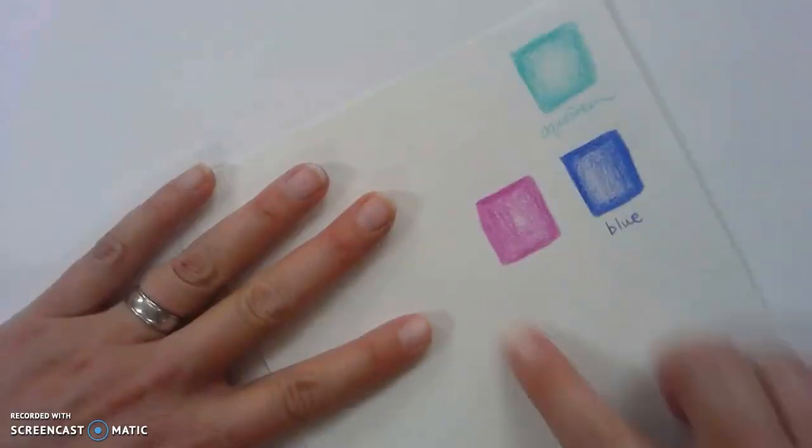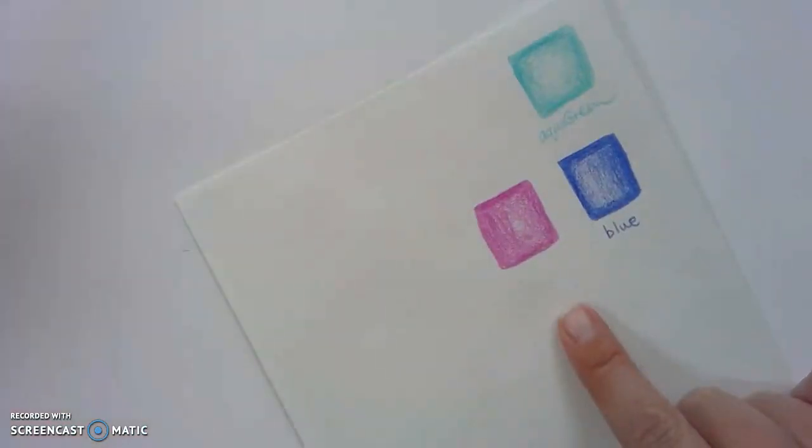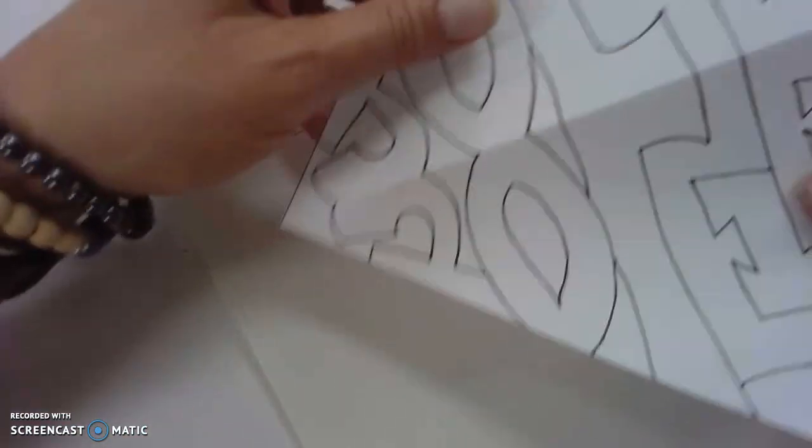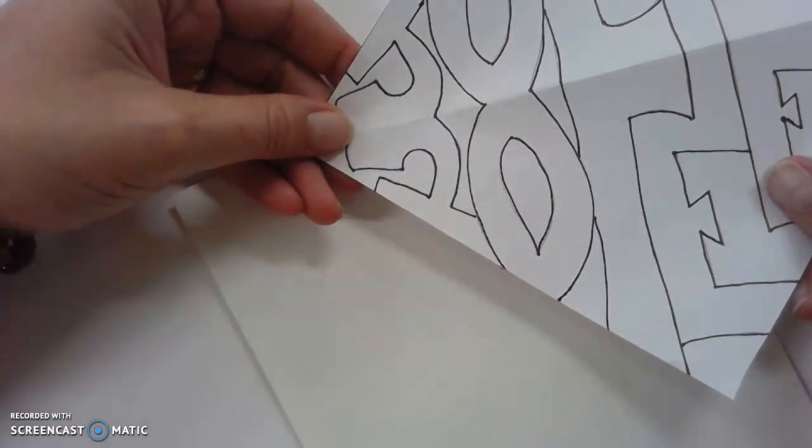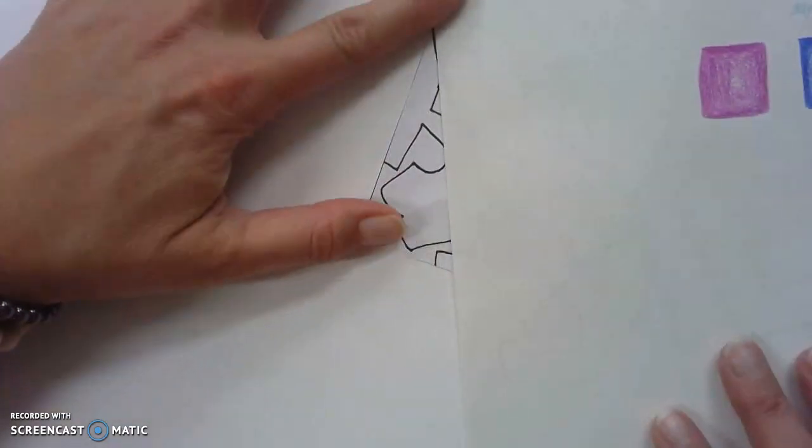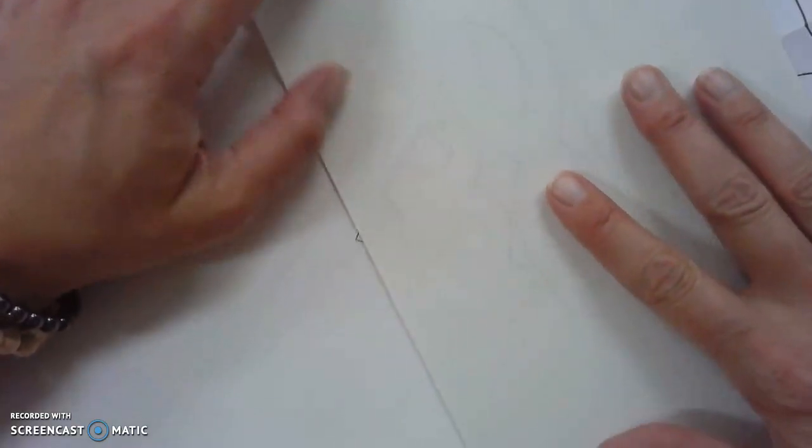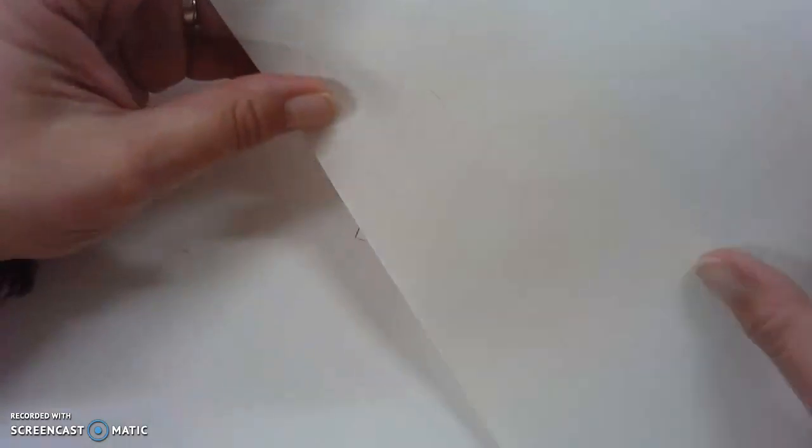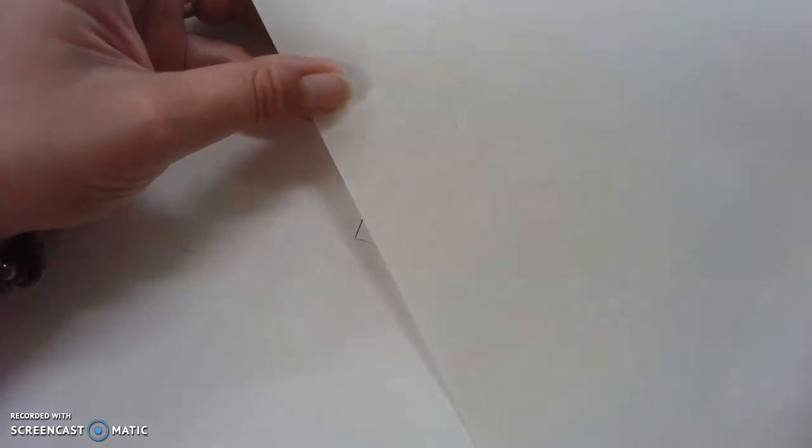Next, once you get this technique down, then I want you to try it with your name template. You're going to slide your name template underneath your paper and trace one of your letters. I already went ahead and traced my J. So, hopefully you can see it there. It's very, very light.